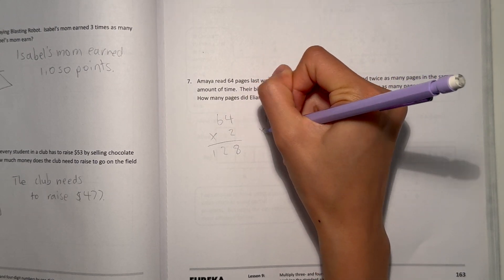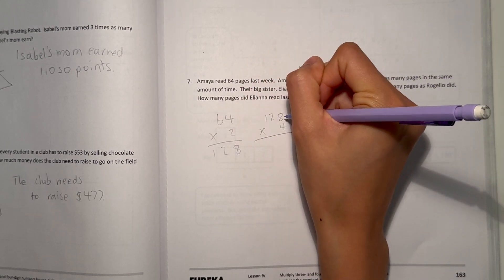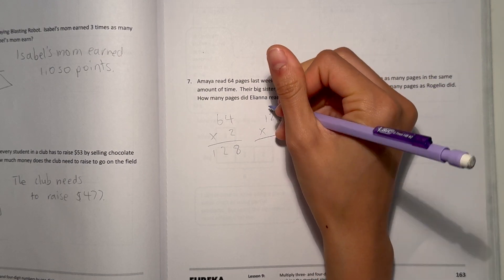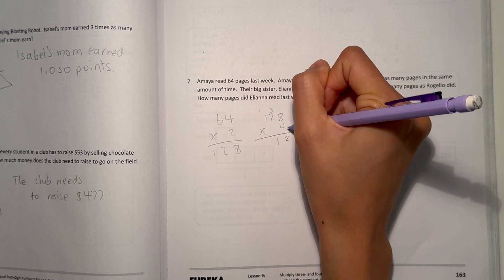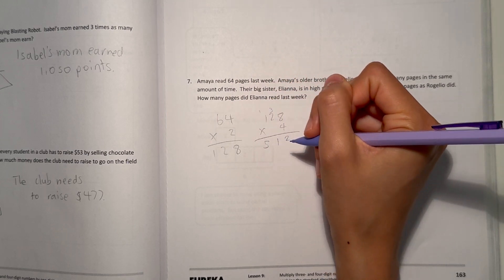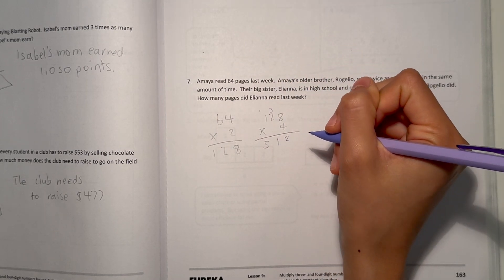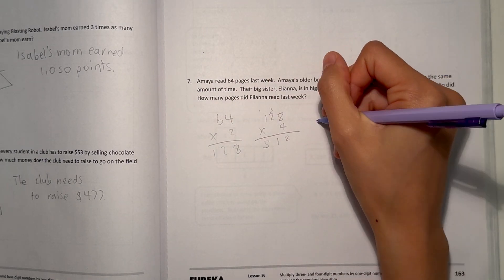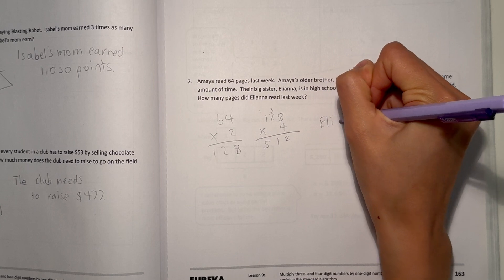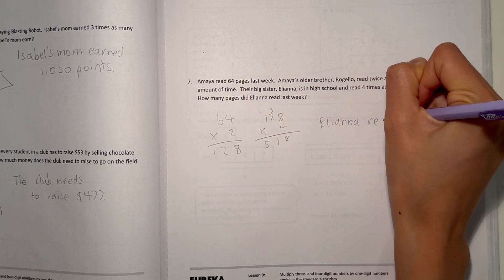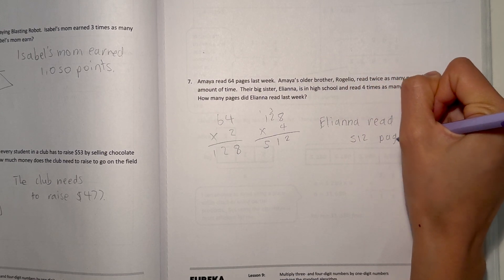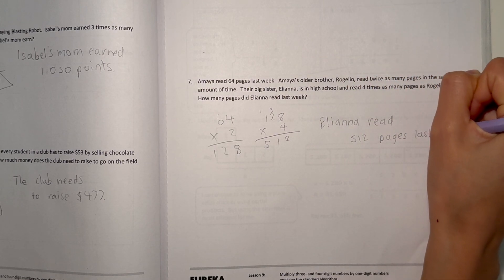128 is how many pages her older brother read. But, Eliana read 4 times as many as that amount. So, 128 times 4. 8 times 4 is 32. 2 times 4 is 8, plus 3 is 11. And 1 times 4 is 4, plus 1 is 5. So, our answer is 512. That means Eliana read 512 pages last week.